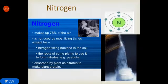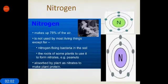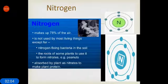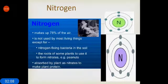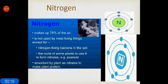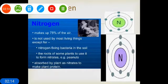Nitrogen makes up 78% of the air. It is not used by most living things except for nitrogen fixing bacteria in the soil. The roots of some plants use it to form nitrates, example peanuts, absorbed by plants as nitrate to make plant protein.